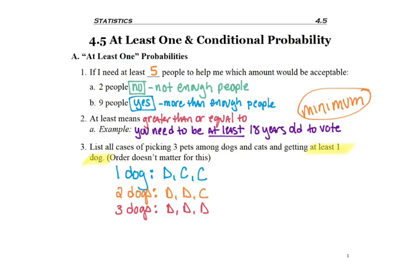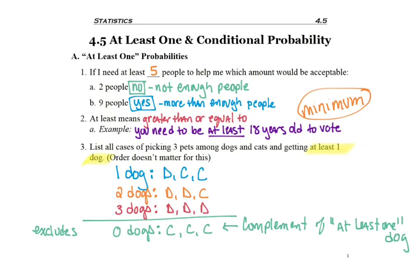So when it comes to finding probability, and we want to write the number of ways something can happen, it starts to get a little bit more complex. Here's one thing that's going to help us. This list excluded no dogs. If I had picked all cats for the three pets, that's the opposite of what I wanted. That's the complement of at least one dog. And that's how we're going to end up solving these probabilities.